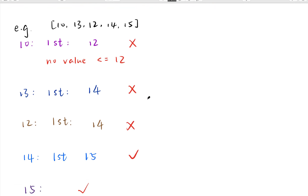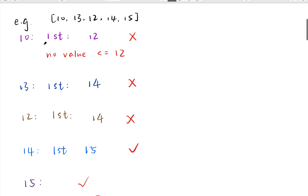We can check every index. First, we check index 0 which is 10. We need to make an odd jump, so we find values greater than 10 — all of 13, 12, 14, 15 qualify — and we pick the minimum, which is 12 at index 2. Next we need to make an even jump, meaning we find elements less than 12, but there are none to the right. So we end at 12, meaning index 0 is not a good starting index.